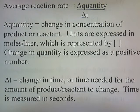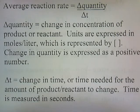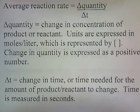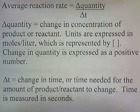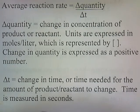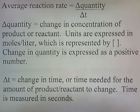Average reaction rate is equal to change in quantity over change in time. A change in quantity is equal to the change in concentration of product or reactant. Units are expressed in moles per liter, which is represented by brackets. The change in quantity is expressed as a positive number. Change in time is the time needed for the amount of product or reactant to change — that's what delta T means. Time is measured in seconds.